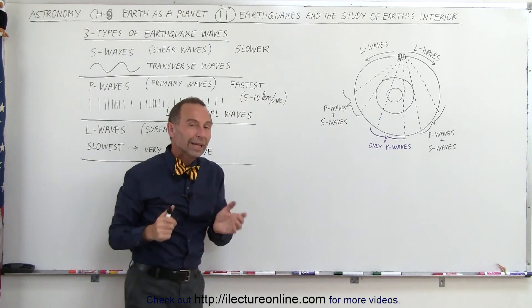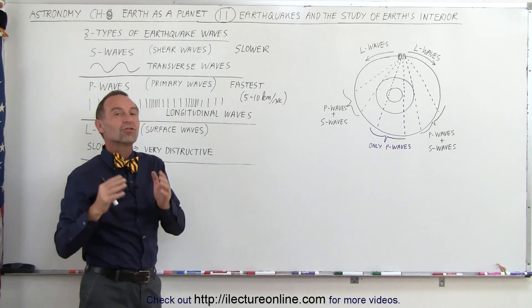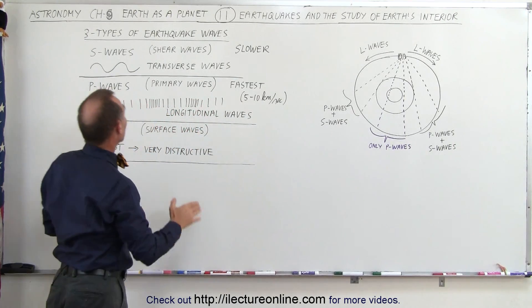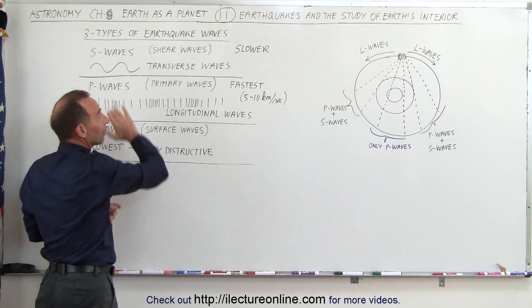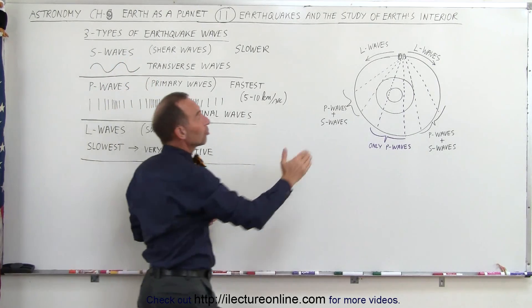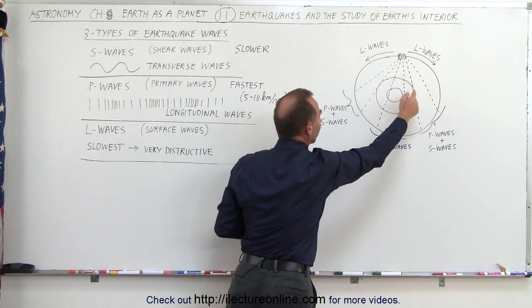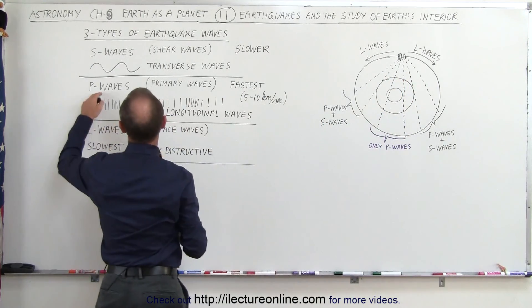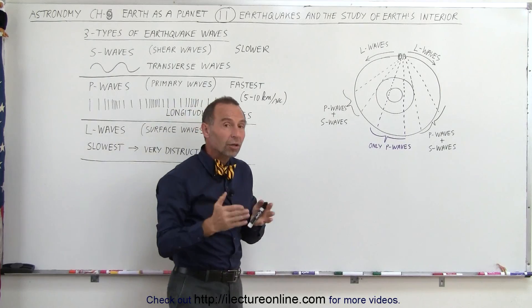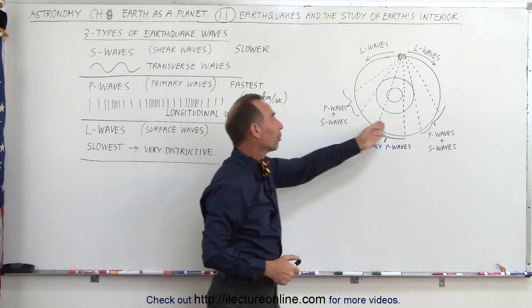So earthquake waves were really the key to helping us understand the interior of the Earth. Again, the three waves: the S waves are the ones that only make it through the mantle. They will stop dead at the portion where the core is molten metal, they will not travel through that. P waves will travel through solid, liquid, and the plastic portion of the mantle.